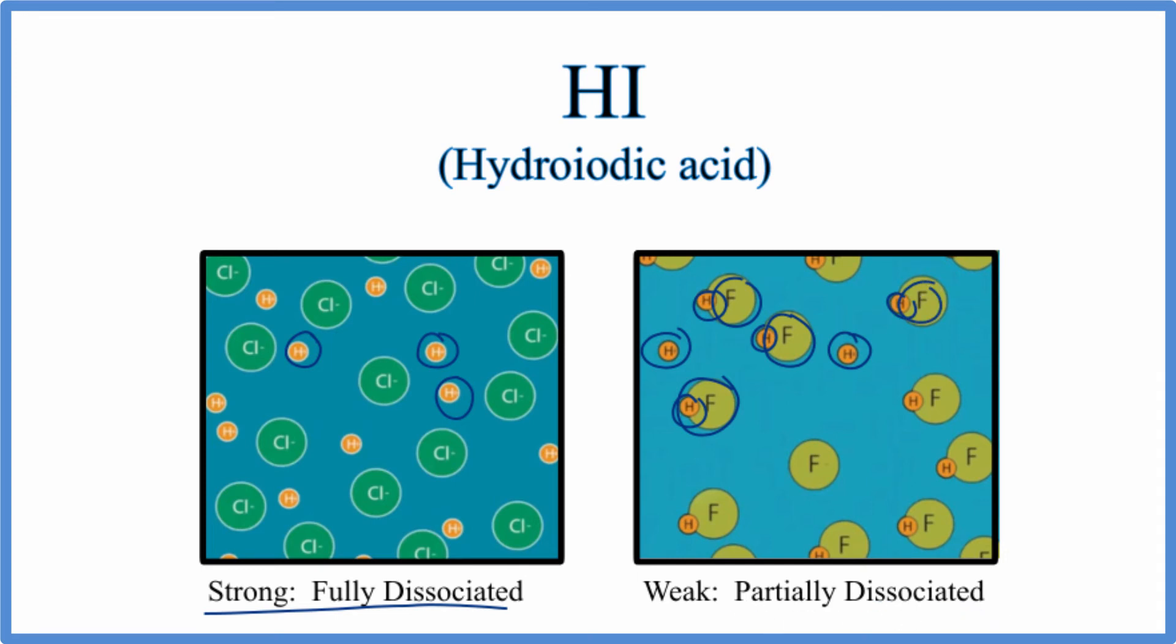We could also look at the pKa for hydroiodic acid. We could look that up, and we'd see that pKa for hydroiodic acid is about negative 9.5. If the pKa is less than zero, that tells us that it's a strong acid.